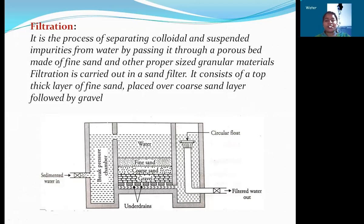Next, filtration. After doing the sedimentation, the water is passed through a vessel which separates all colloidal and suspended impurities from water. When this water is passing through a porous bed in this vessel, the porous bed is made by fine sand and other properly sized granule materials. Filtration is carried out in a sand filter. It contains a top thick layer of fine sand placed over a coarse sand layer followed by gravel. It absorbs all the colloidal impurities from water and finally the water obtained is free from dissolved impurities and colloidal impurities.